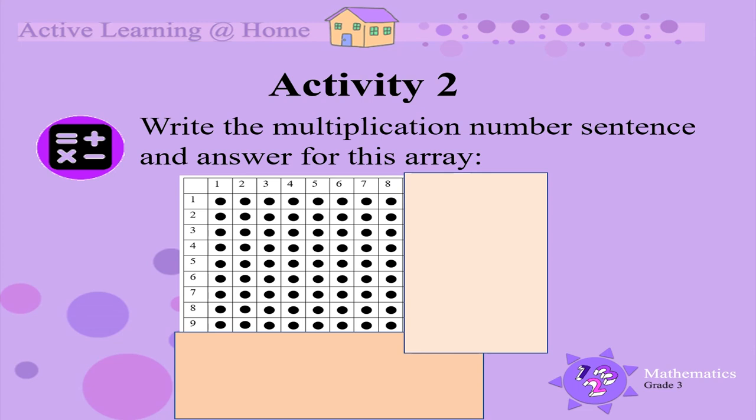Let's do one more. Write the multiplication number sentence and answer for this array. There are 9 groups of 8, so the multiplication number sentence is 9 times 8. And when we count the dots, the answer is 72.